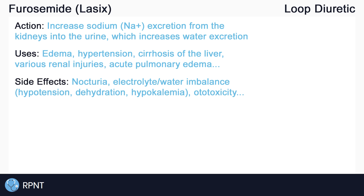We know that diuretics increase the amount of electrolytes and water that is excreted by the body, which increases urine output. So if given late in the day, furosemide is likely to cause an increase in urination at night, also known as nocturia.